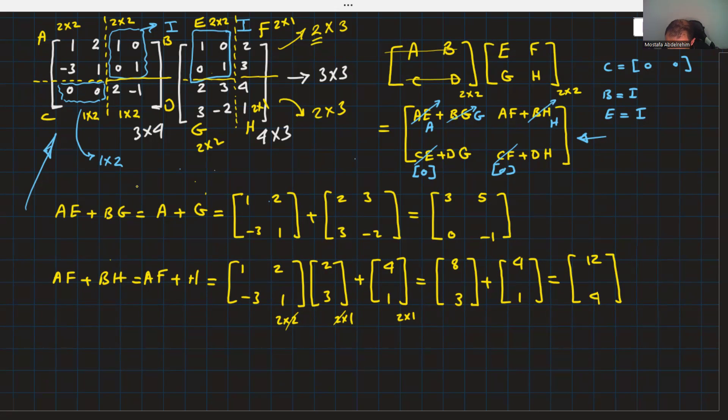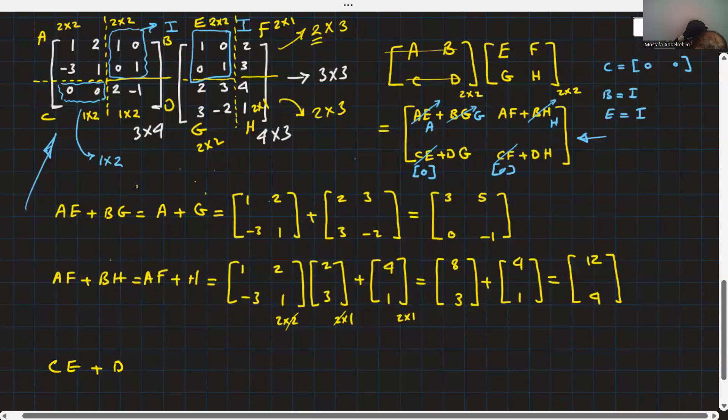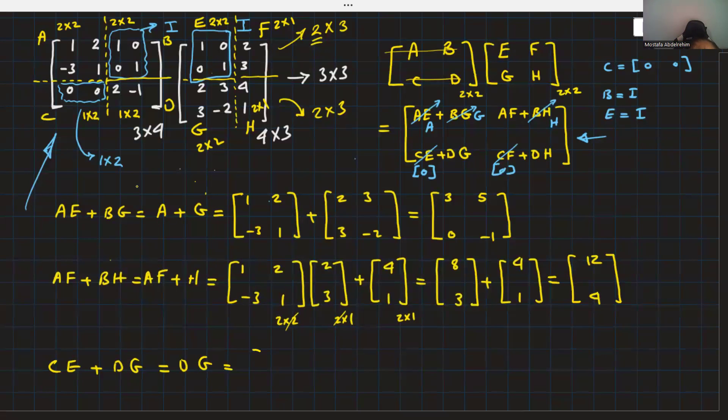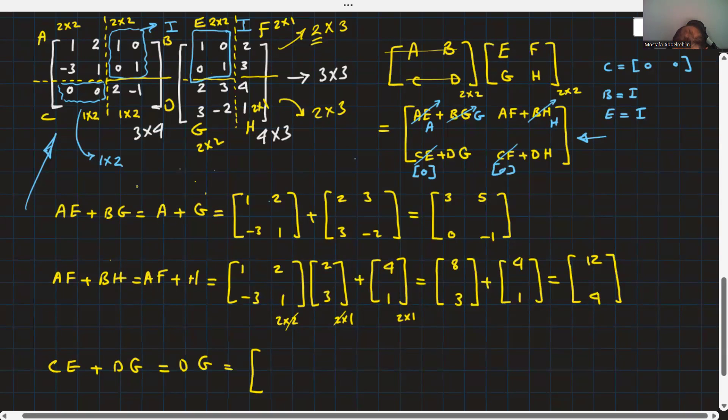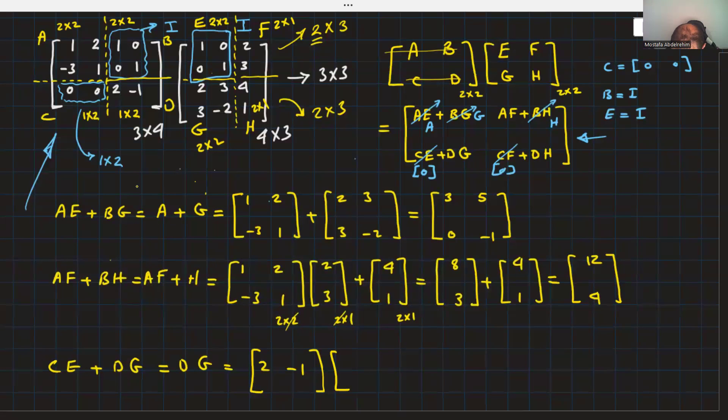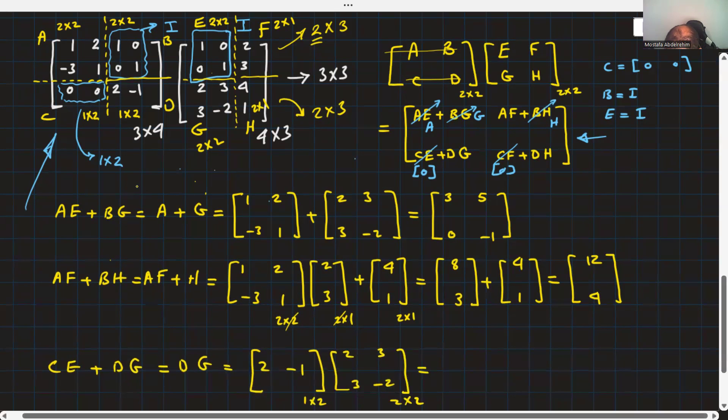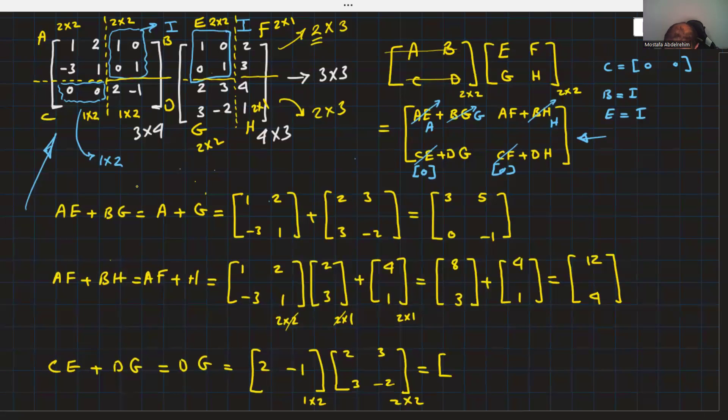Now, let's do CE, DG. CE is 0, just ignore it. So, we just have DG. We multiply D and G. D is 2 minus 1. G is 2, 3, 3 minus 2. That's 1 by 2. That's 2 by 2. That should give us 1 by 2. 1 row, 2 columns. 2, this is 4. Minus 3 is 1. 6 plus 2 is 8. Yes, 1 by 2.